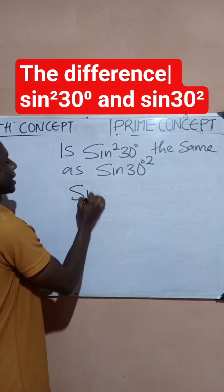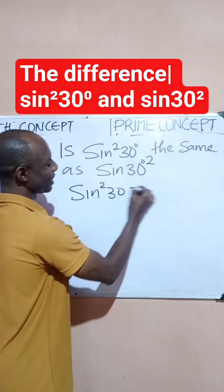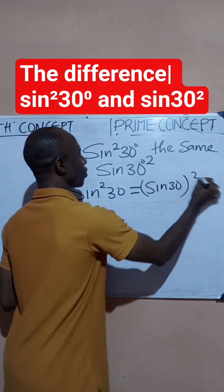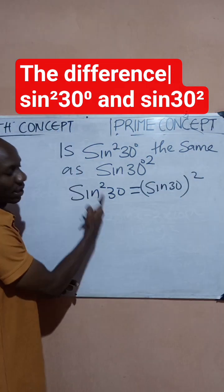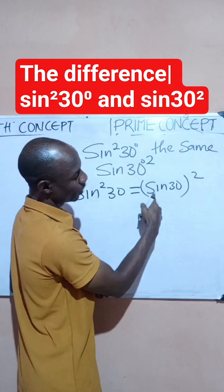What does the first one mean? sin²30 is simply the same as (sin 30)². So whenever you have sine squared of an angle, it simply means you evaluate sine of that angle, and when you get the result, you square your result. So this one is true, but the second case is different.